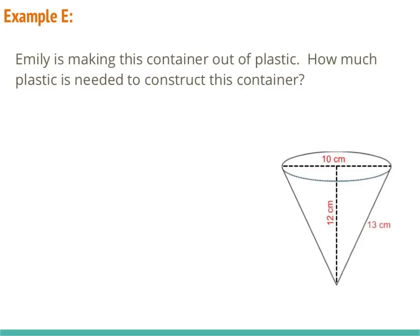In example E, Emily is making this container out of plastic. How much plastic is needed to construct this container? So this is an example of a surface area of a cone. Our formula sheet says the surface area formula is πr² plus πrL. This L means slant height, and our slant height is 13 centimeters.